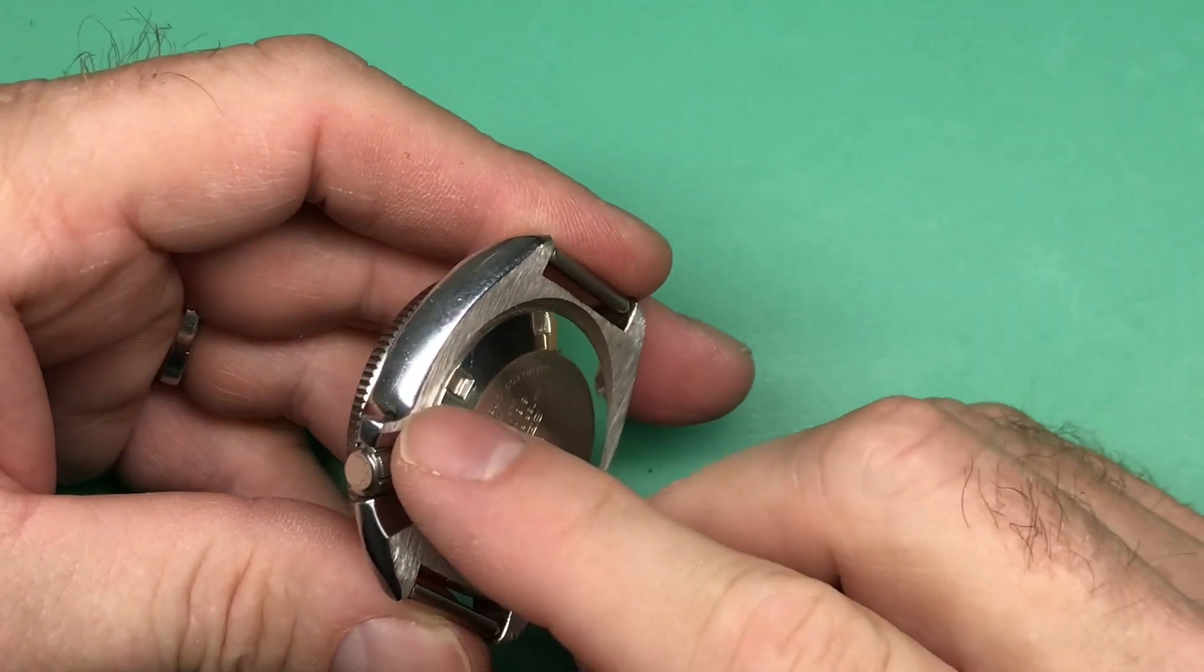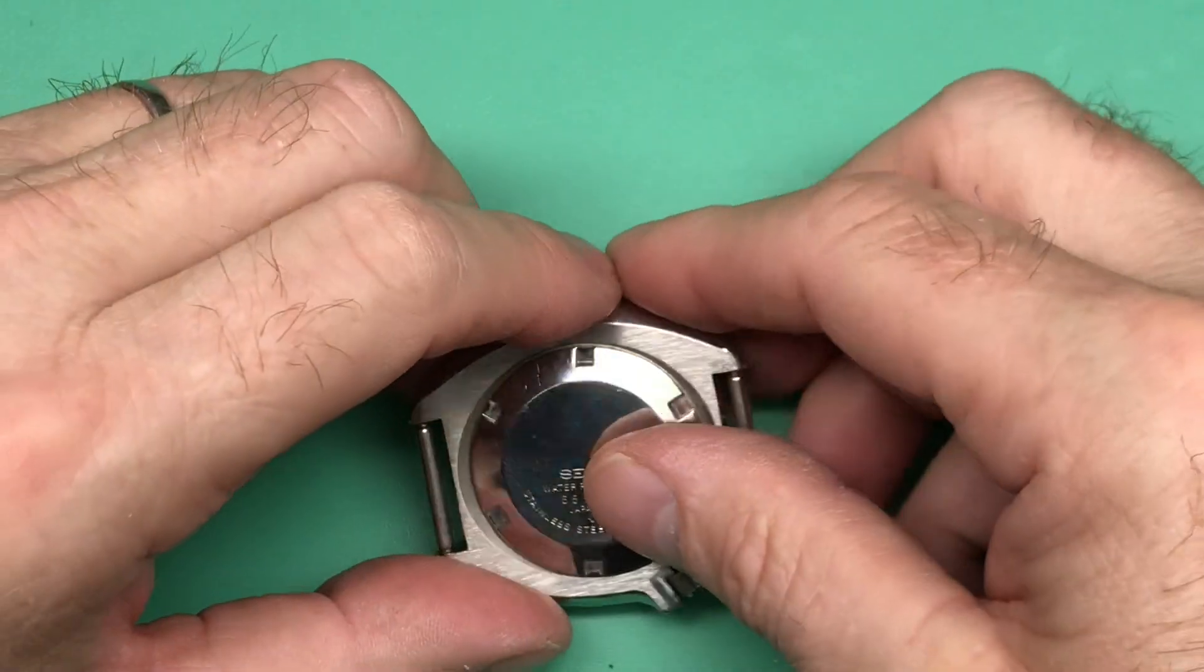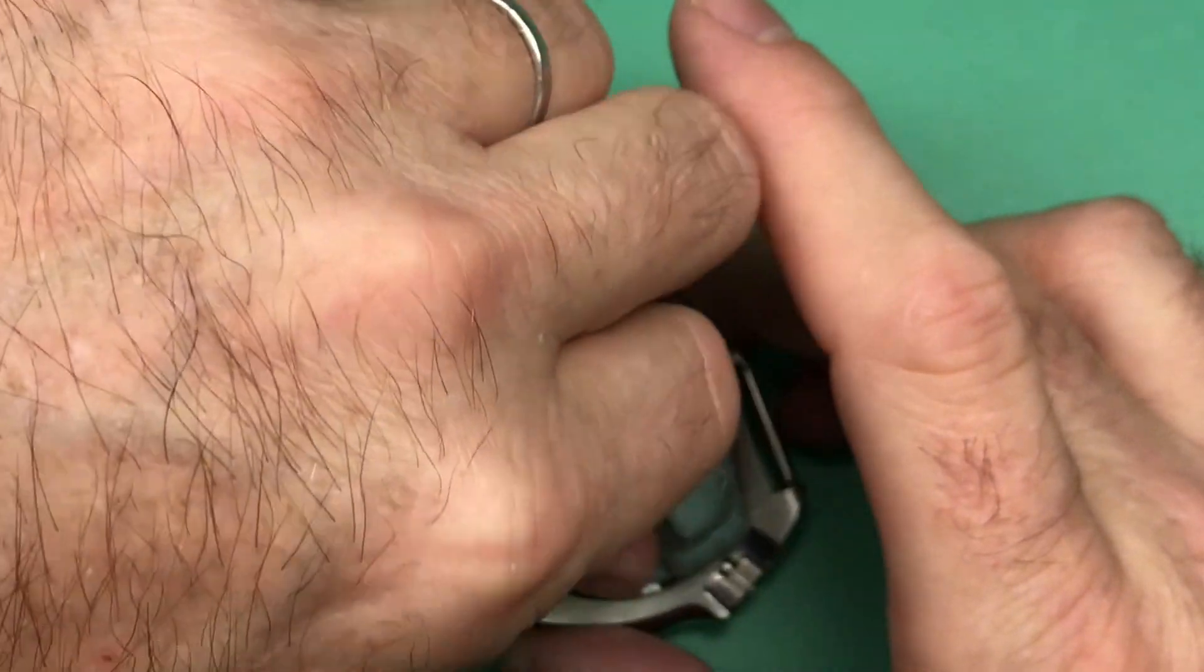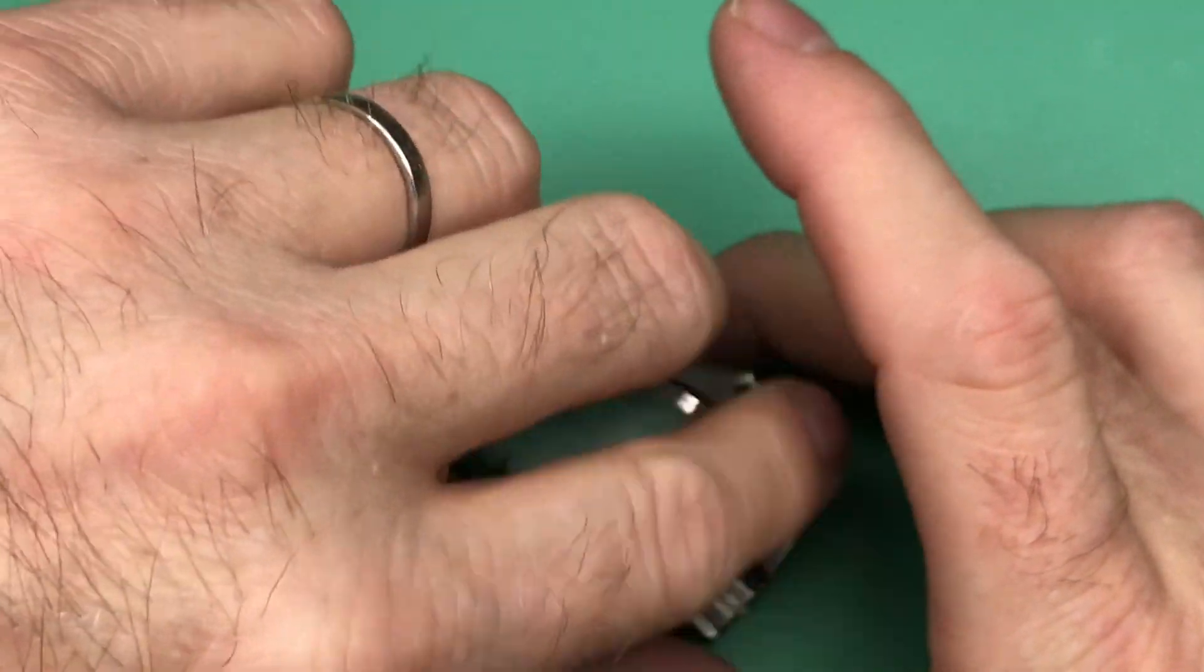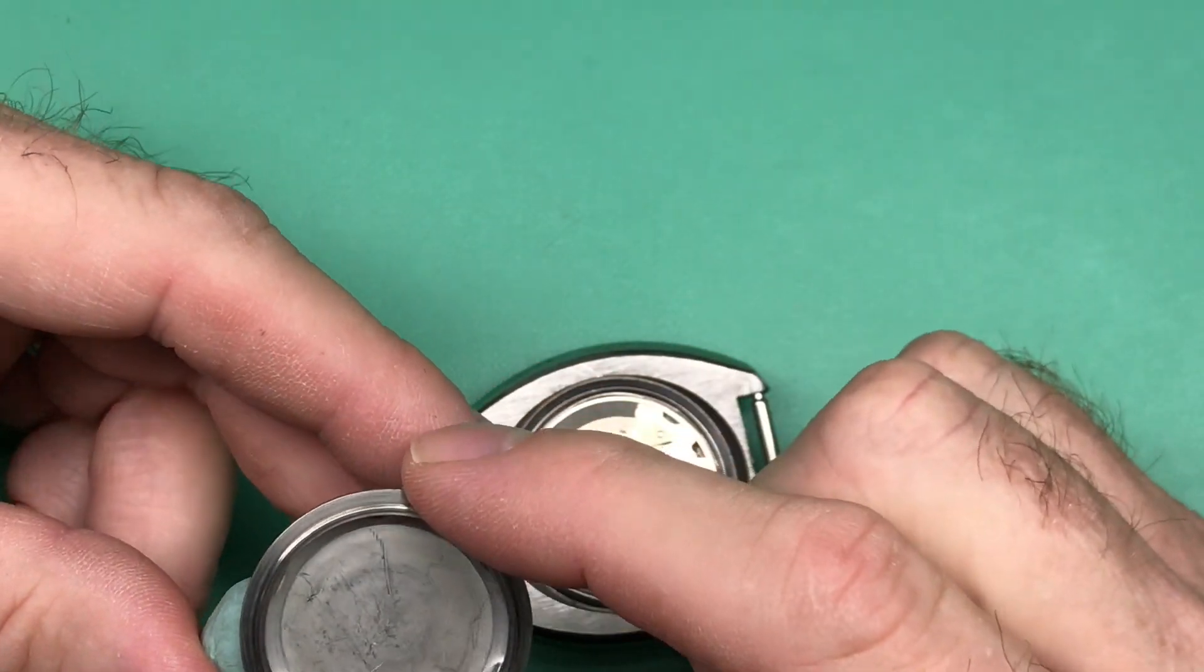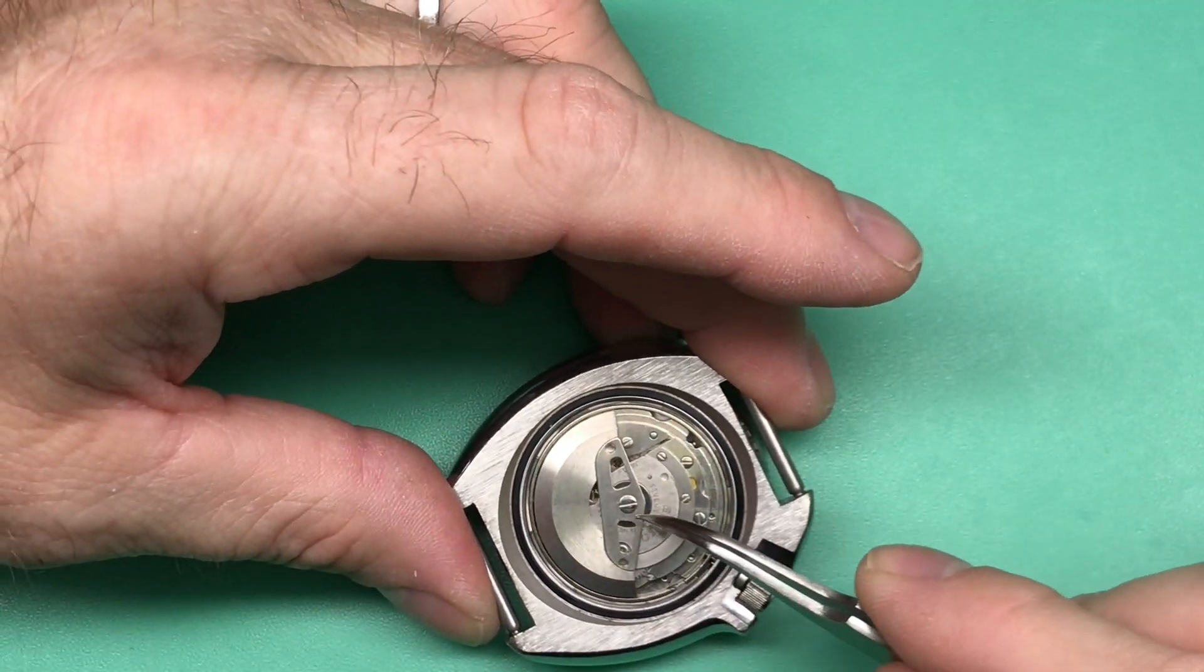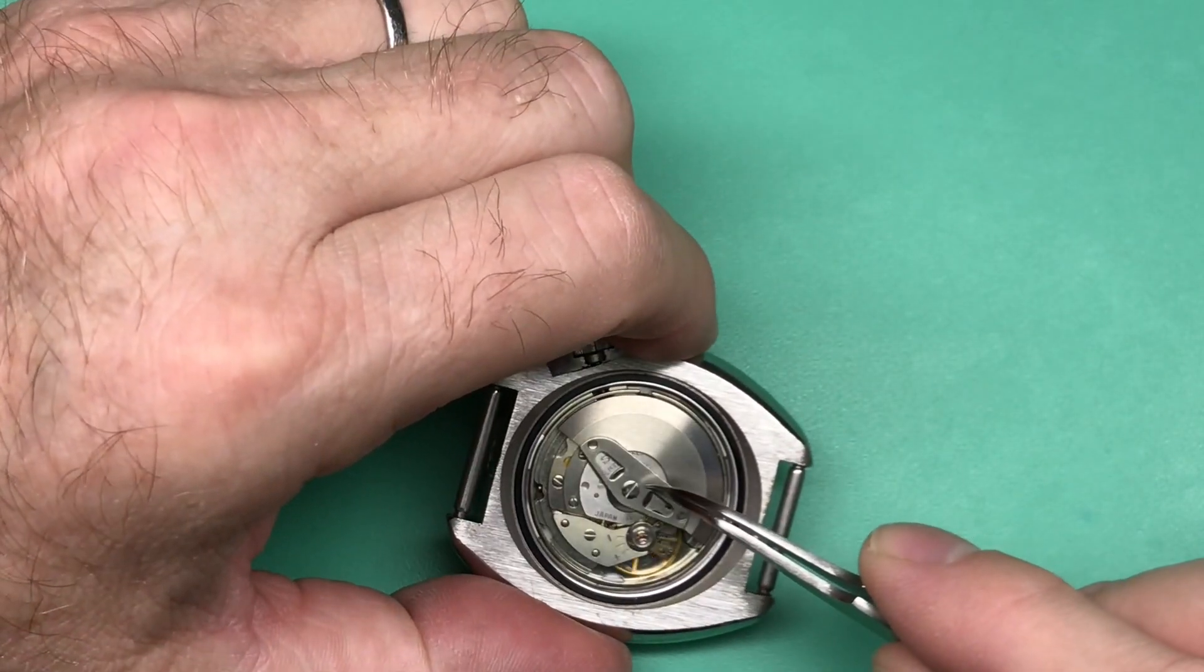A couple things to keep in mind. Of course, your crown. Let's go ahead, it is running, but let's go ahead and see if we can get the case back off. Case back's easy, that's an easy one. We can look together to see what the service history might be. Nothing in the case back that looks like service history. Clean movement. It's a little haze, but not bad.